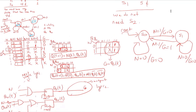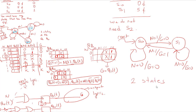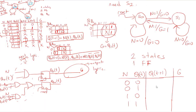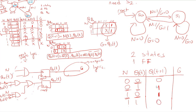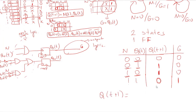With two states we only need one flip-flop. The Mealy state table: from state 0 with n=0, next state=0; from state 1 with n=0, next state=1; from state 0 with n=1, next state=1; from state 1 with n=1, next state=0 and output g=1 (all other g values are 0). The resulting equations are: Q(t+1) = Q(t) XOR n, and g = n · Q(t).